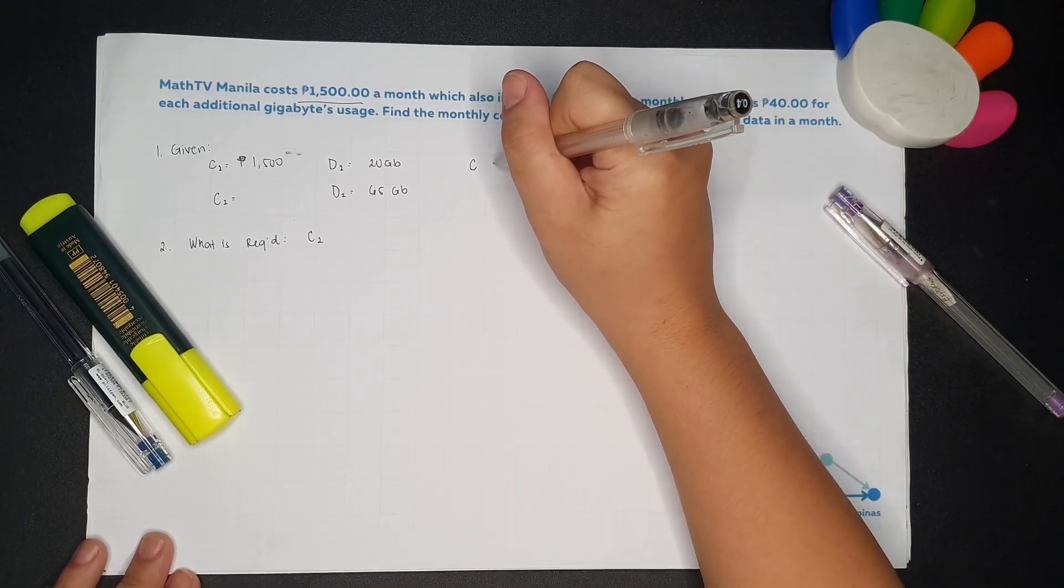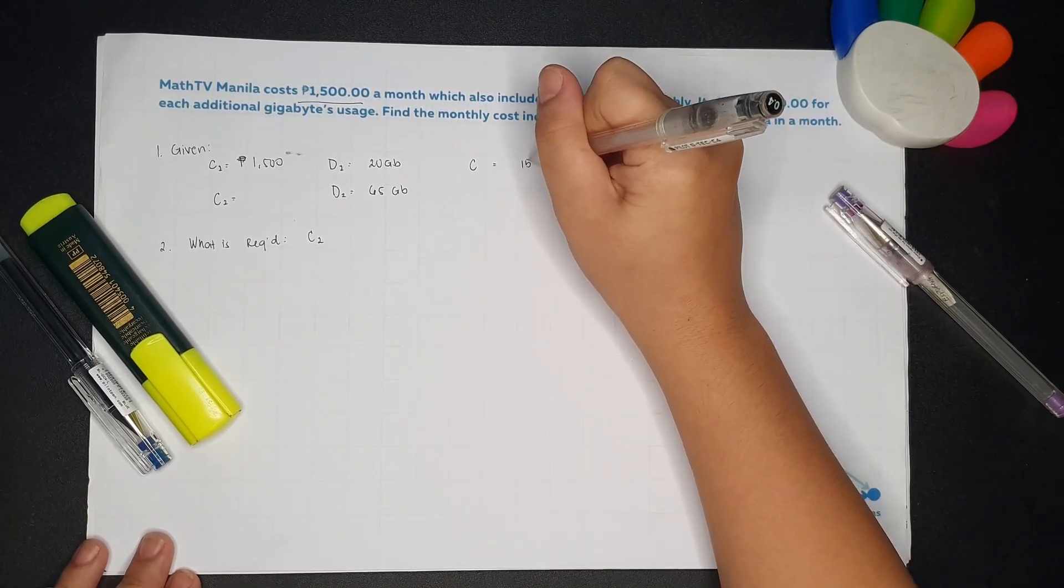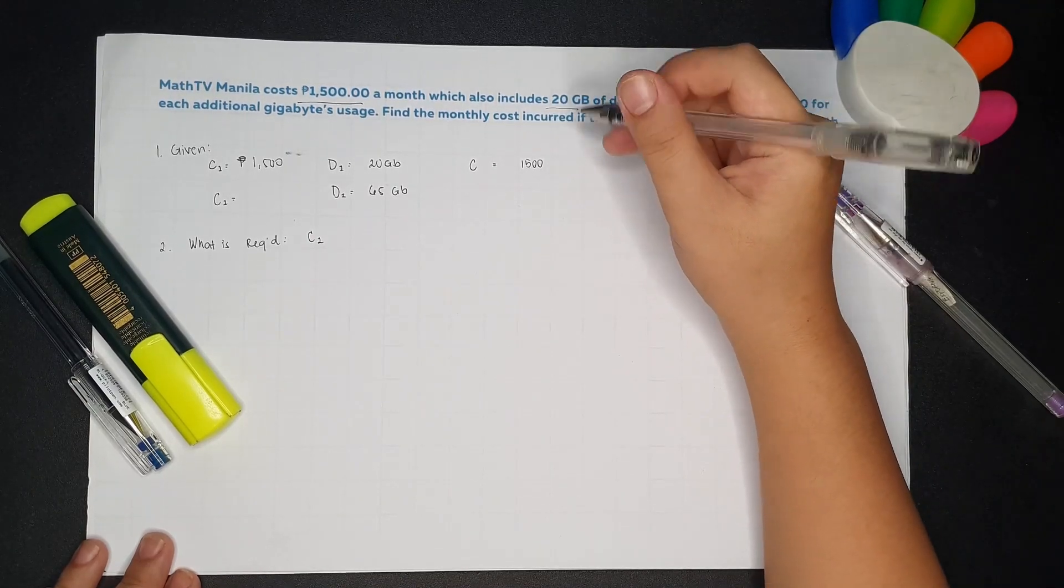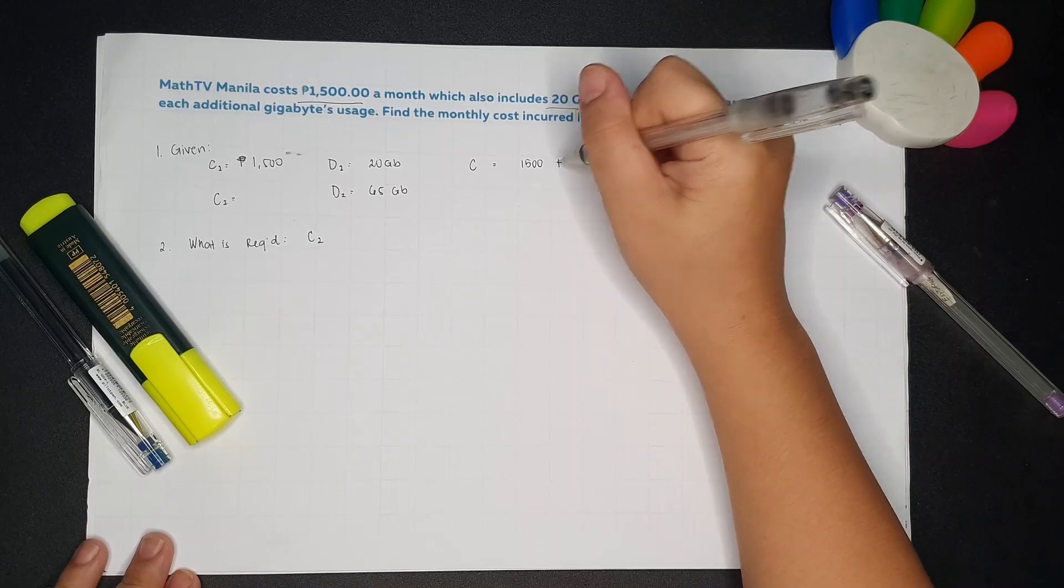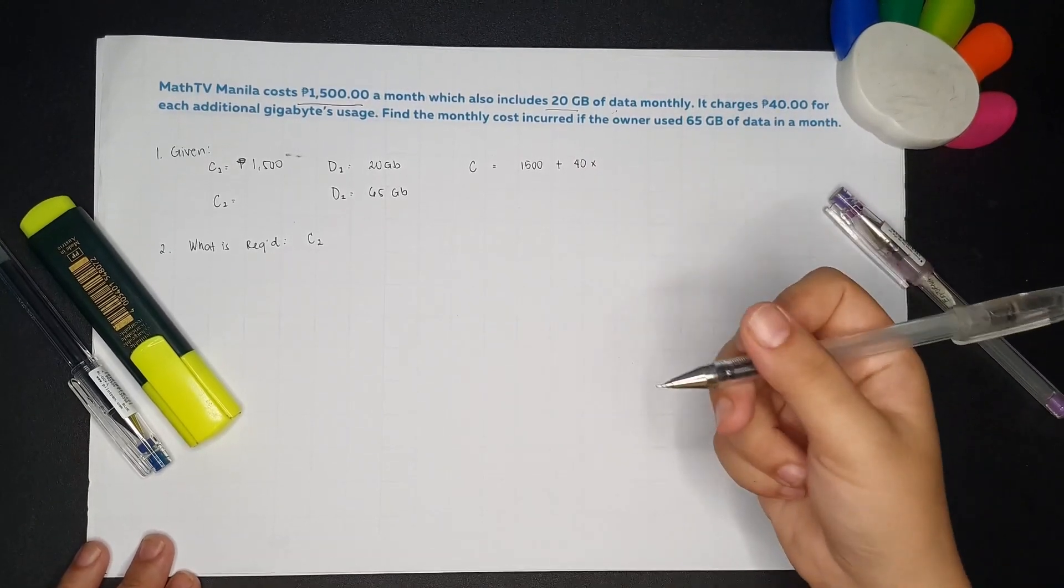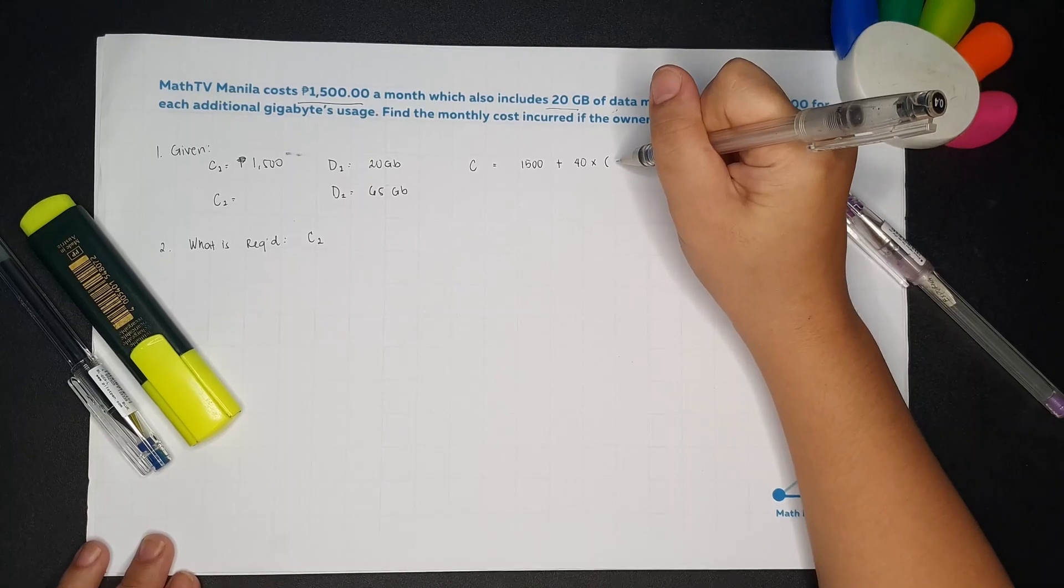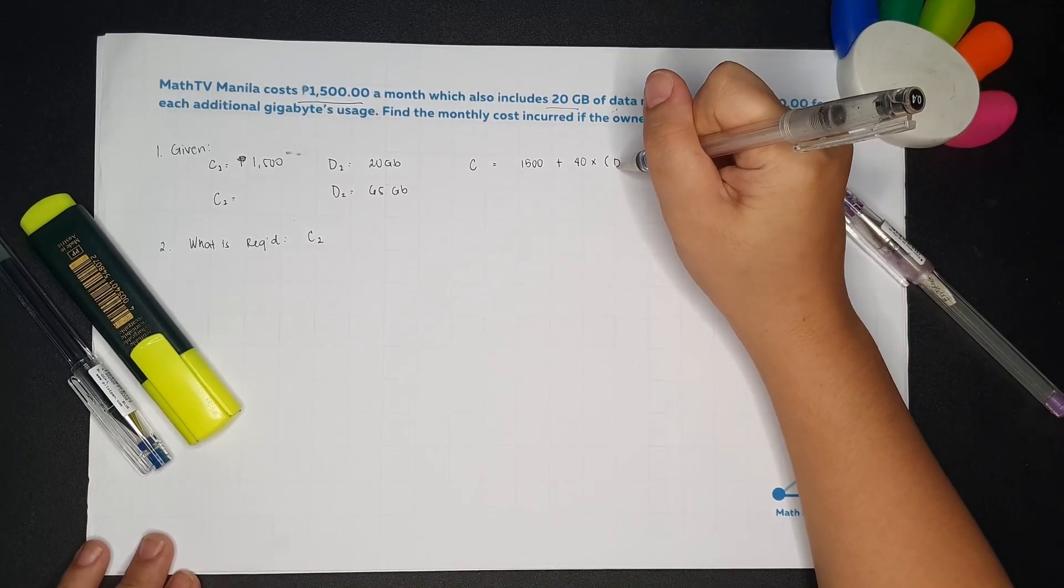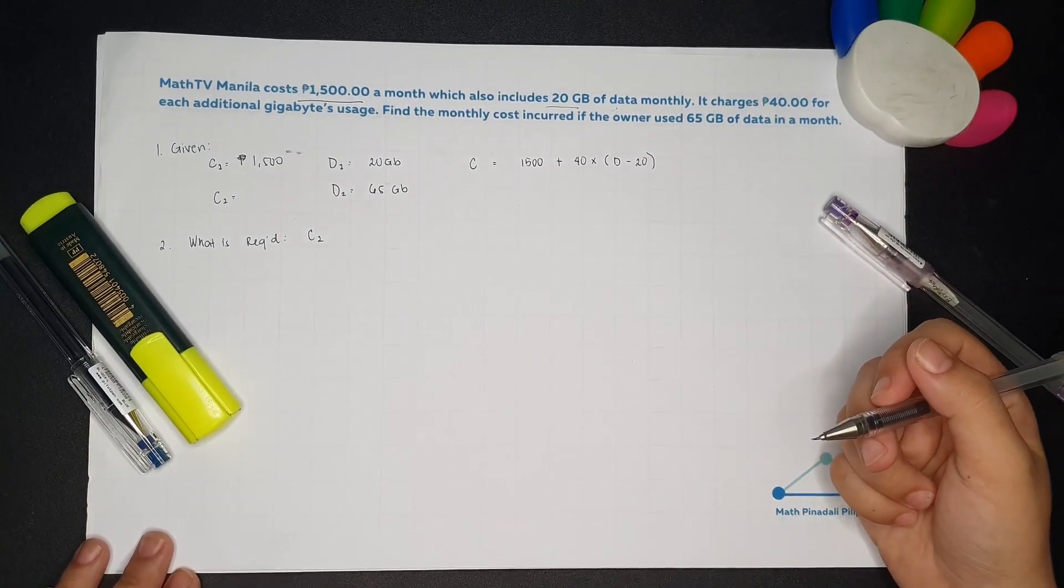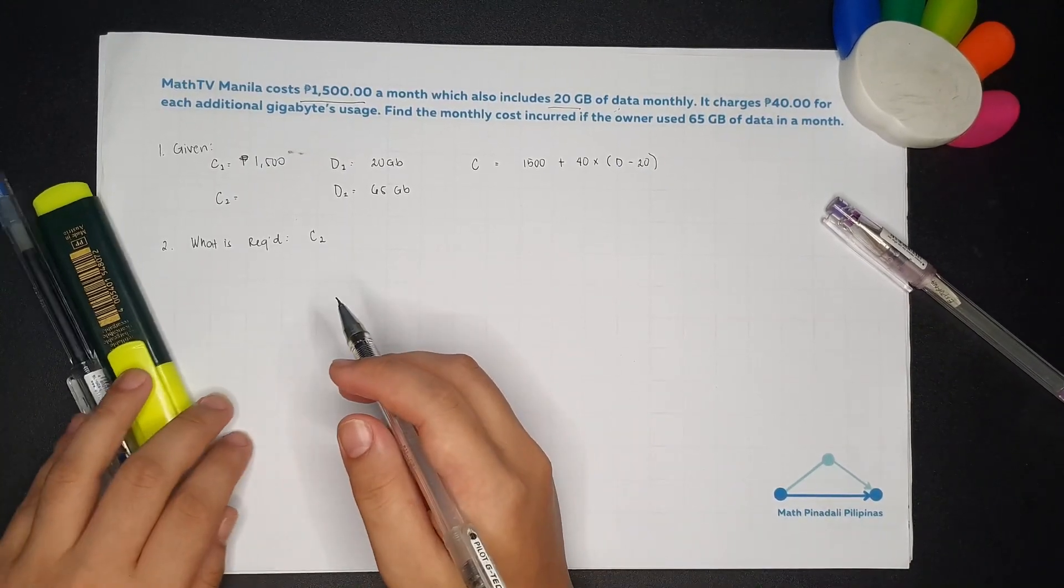We can write that function such as the cost will be 1,500 - this is the cost for the first 20 GB of data - plus, we multiply 40 pesos by the excess beyond 20 GB. So for example, this is D2 minus 20 GB, because our reference is the 20 GB.